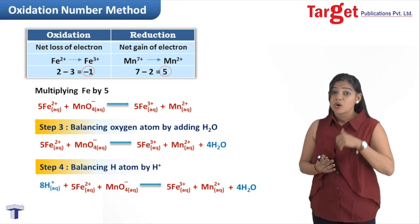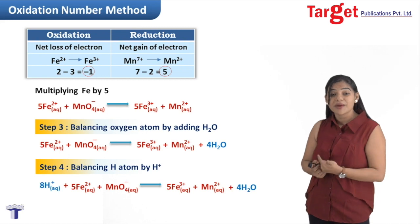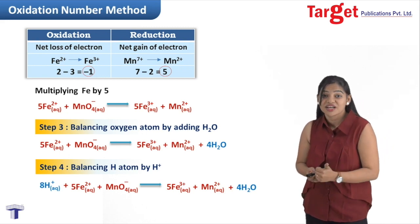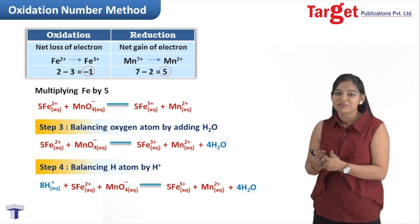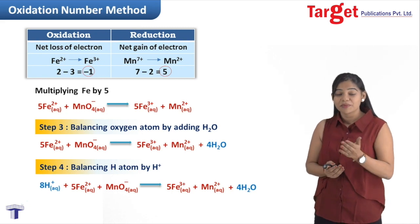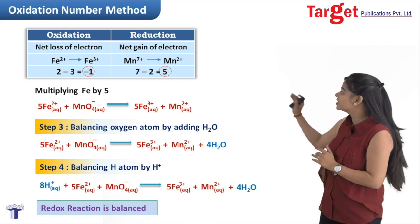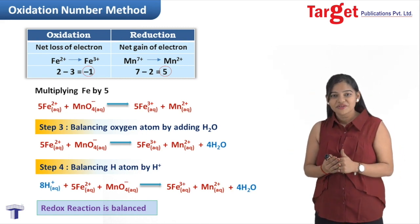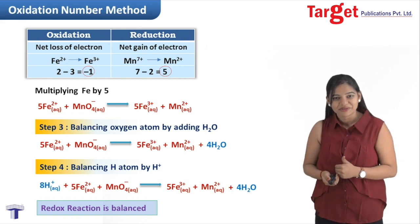Now all the atoms are balanced — oxygen, hydrogen, and all charges are balanced. The number of electrons lost equals the number of electrons gained. We have finished balancing the redox reaction. Thank you for this module and in the next module we will see a few more examples. Goodbye.